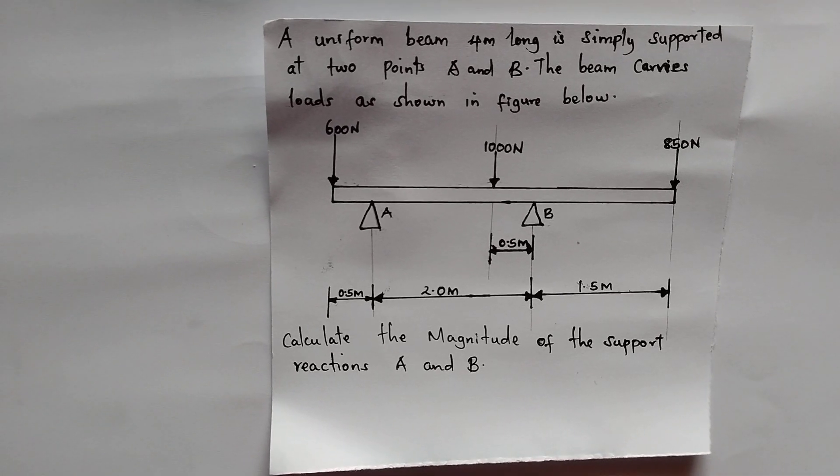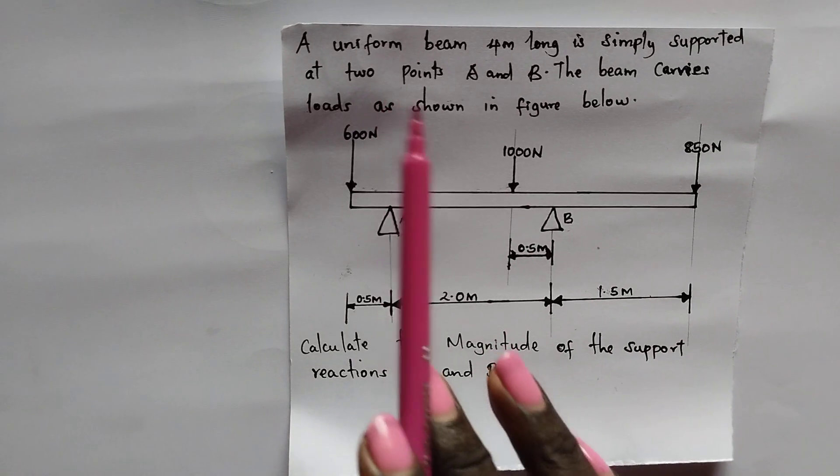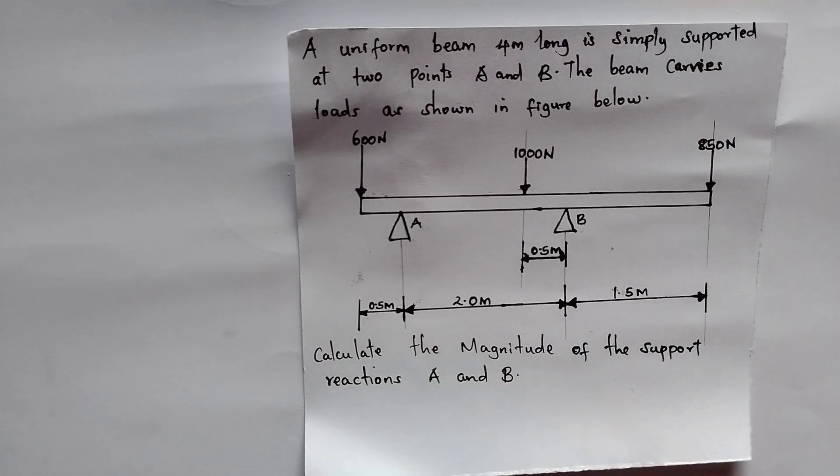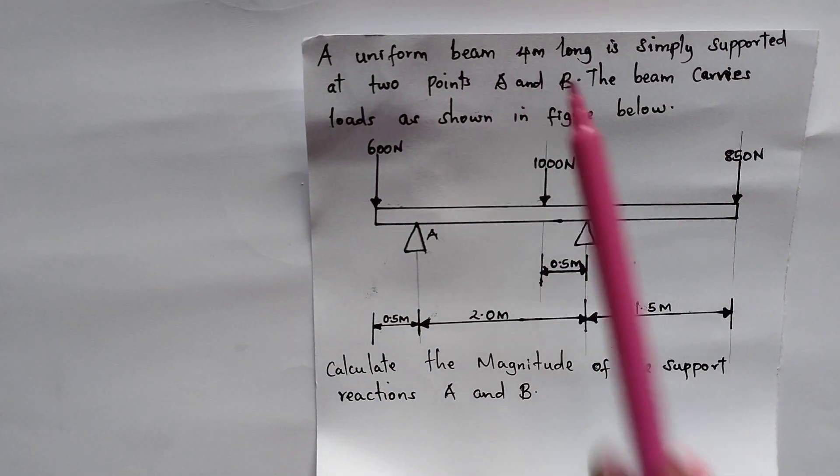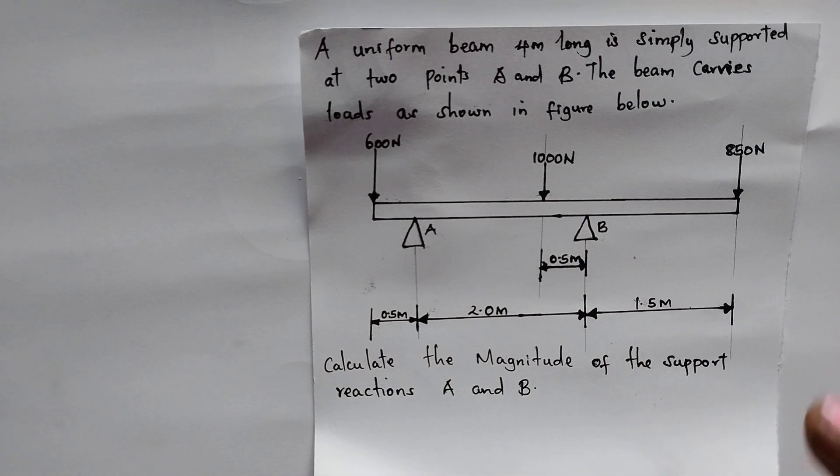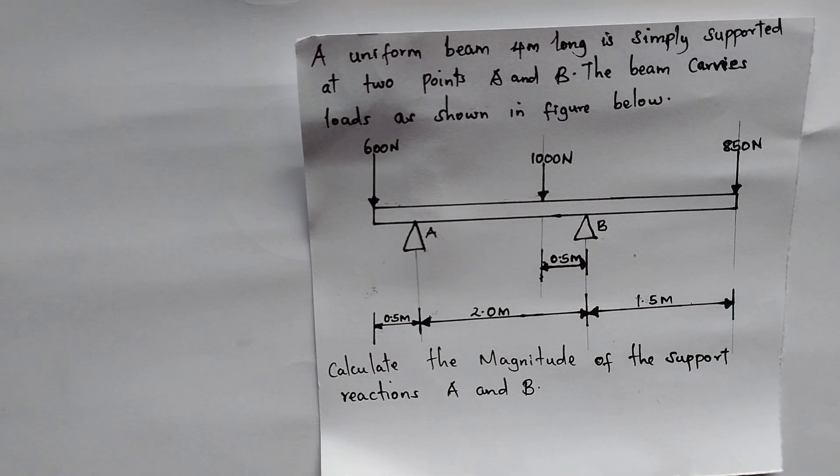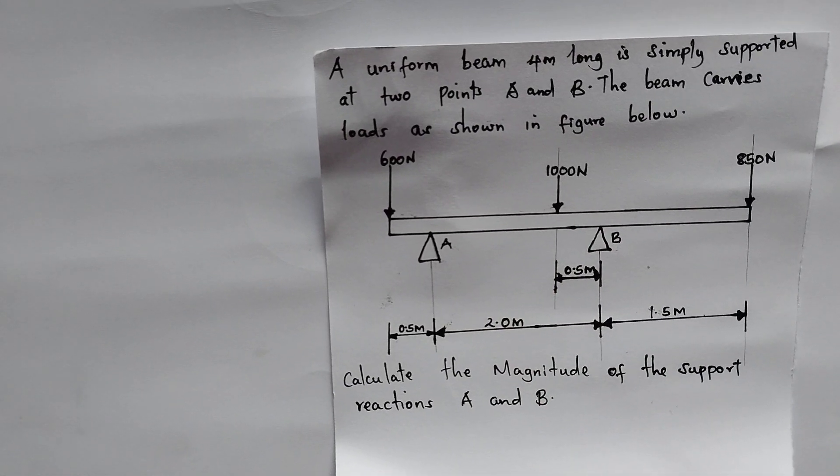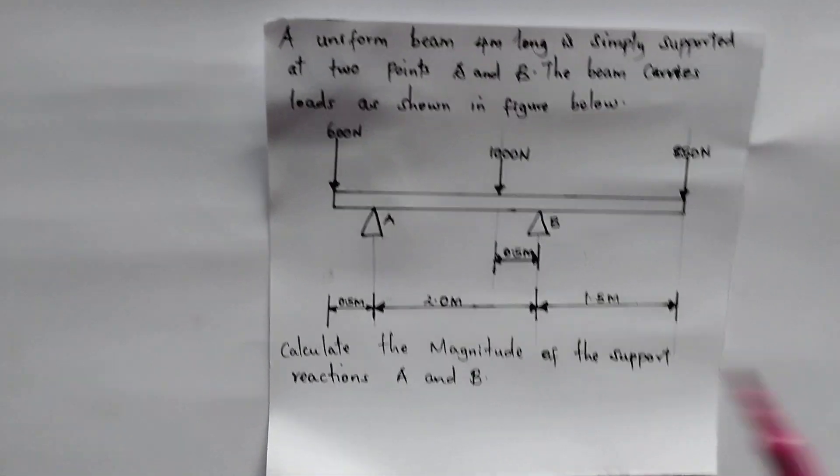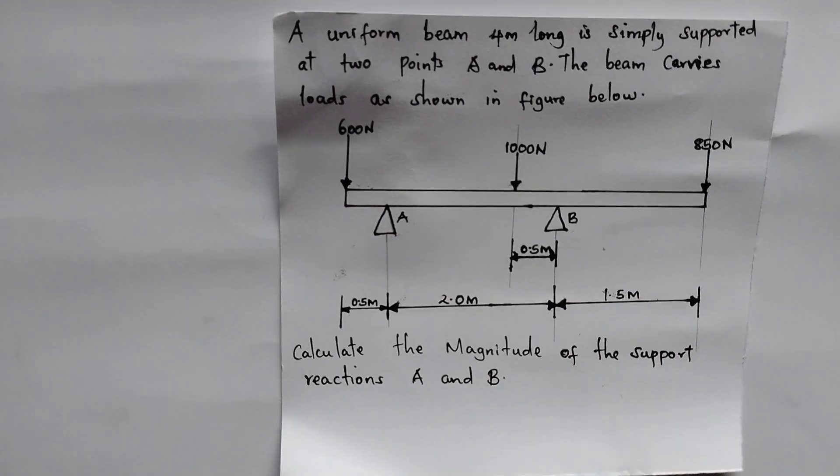Welcome again. We are continuing on where we left from on moments and today we have a question. It says that a uniform beam 4 meters long is simply supported at two points A and B. The beam carries the loads shown. So maybe you can pause your video and try and examine the forces, where they are located, and the point of support.